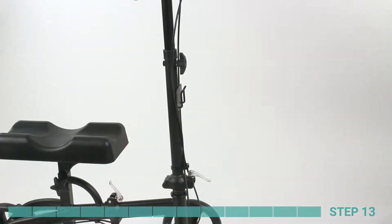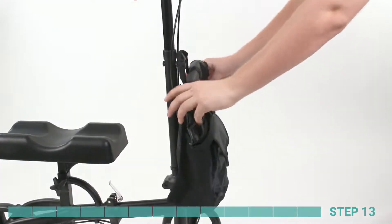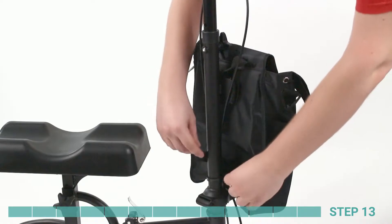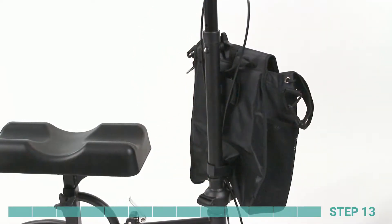Step 13. To install the bag, fit the hooks on the steering column into the loop in the back of the bag. Open the Velcro straps at the bottom of the bag and secure them around the steering column.